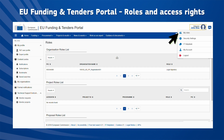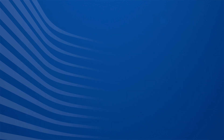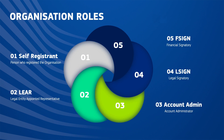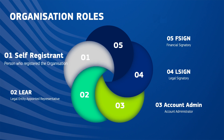The roles and access rights regulate the information a user can view and the tasks they can perform, either at the level of the organization or at the level of a project. Let's start with the organization roles. Organization roles are linked to the registered entity and its data, without any access to the projects or contracts. There are five roles at this level.